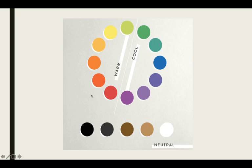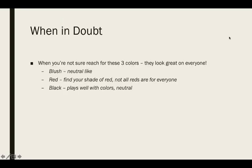Okay, so here we can see the warm end of the spectrum and the cool end of the spectrum. And then we've got a little bit of the neutrals down here. But remember, if you're neutral, you can kind of play around in anywhere. But you want to find a good balance. You don't want to lean either or. But when in doubt, if you're not sure what you are, these three colors are going to look good on everybody. They're tried and true. Blush, this is a neutral-like pink. Red, not all reds are for everybody. You need to find your particular shade of red. And black plays well with other colors. It's very neutral.